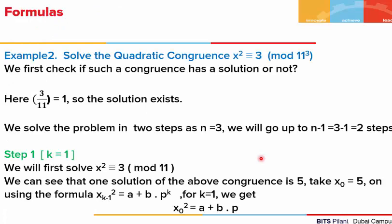Let us look at another example, where we are asked to solve the quadratic congruence x² ≡ 3 mod 11³. We will again first check whether the solution exists, so we find the Legendre symbol (3/11). Its value is 1, so the solution exists. As the power of 11 is 3, we require 3 minus 1 equals 2 steps. In the first step, k = 1, and we solve x² ≡ 3 mod 11. One solution is x₀ = 5, since 5² = 25 and 25 − 3 = 22 is divisible by 11.